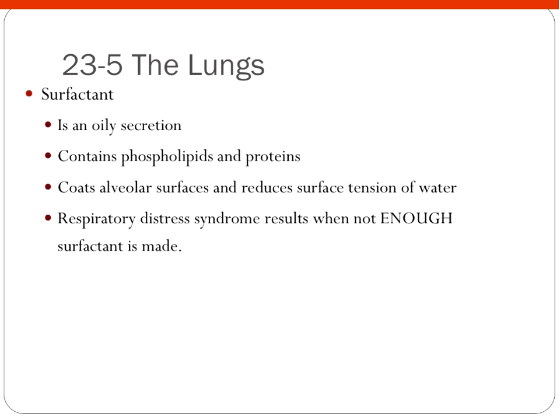Surfactant is an oily secretion containing phospholipids and proteins that coats the alveolar surfaces and reduces the surface tension of water. You can be in respiratory distress when you don't make enough surfactant. This is very problematic for premature babies because making surfactant is one of the last things that happens in fetal development. If a baby is born too early, they may not have started making enough surfactant, making it very difficult to breathe outside the womb. We can give them a derivative of surfactant to help facilitate their lives until their body makes its own.